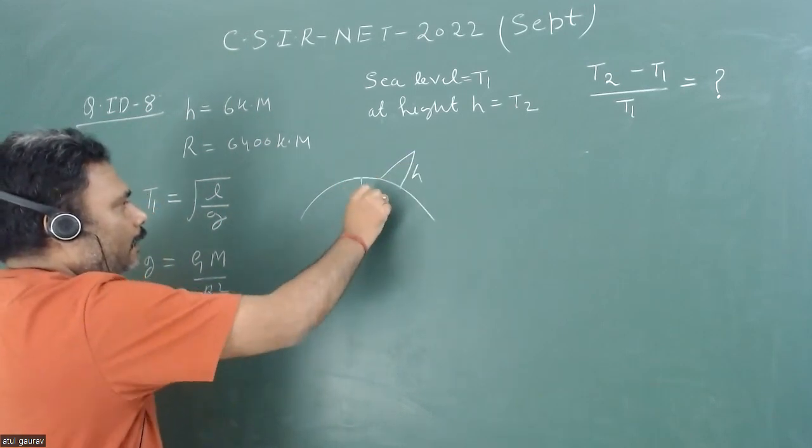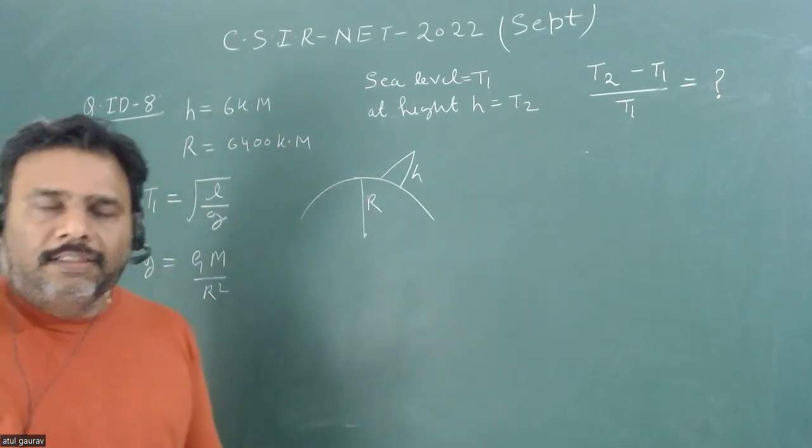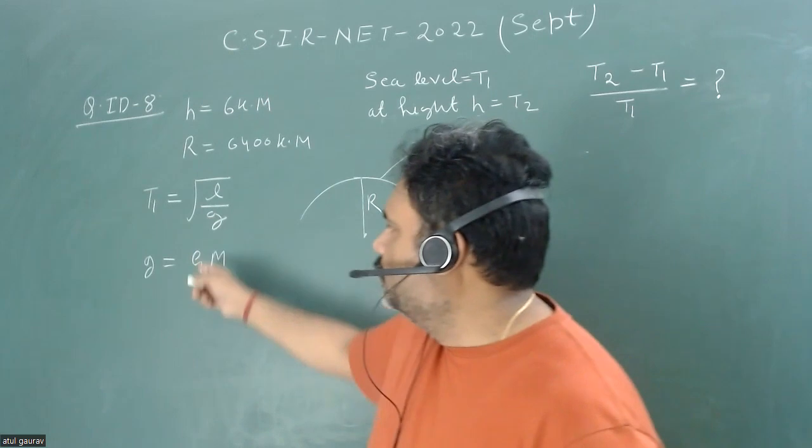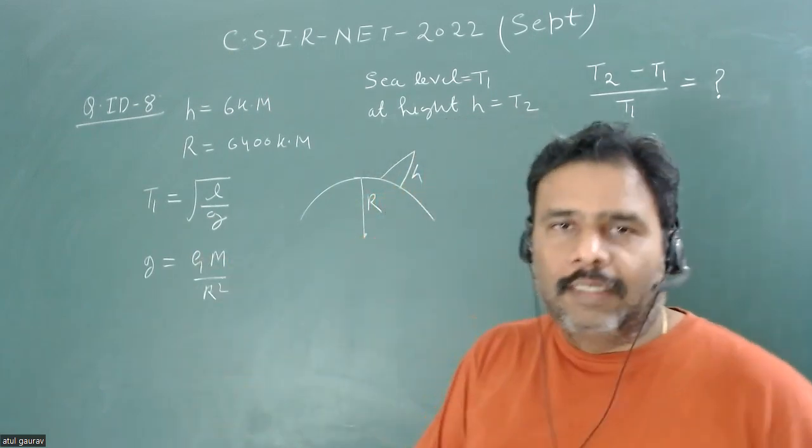This is the center of earth, so this is at r. At the surface of earth—that means we are at sea level—we are measuring that g is nothing but GM upon r square, which is nothing but 9.8 meter per second squared.